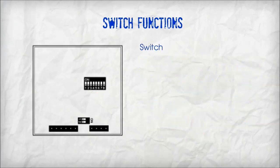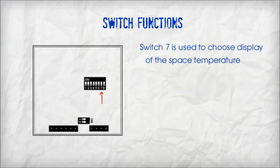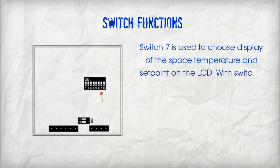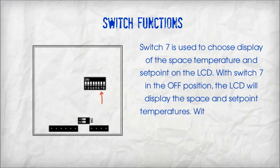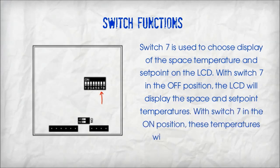Switch 7 is used to choose display of the space temperature and set point on the LCD. With switch 7 in the off position, the LCD will display the space and set point temperatures. With switch 7 in the on position, these temperatures will not display on the LCD.